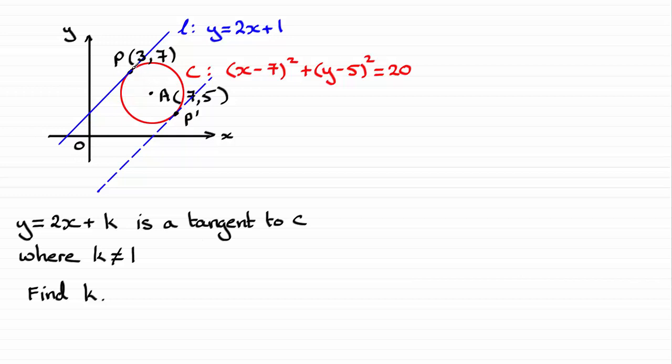So what is that displacement from p to a? Well, we can put that in as p to a, we'll have it as a vector. Going from p to a, we move from three units here to seven units there. That's a distance of four units across. So that's going to be a vector there of four units. And then we move from seven down to the five here, seven down to the five, is a displacement of negative two units.